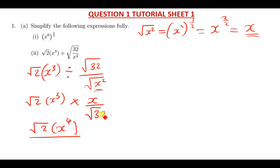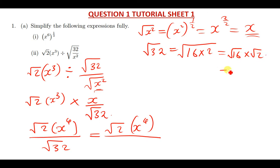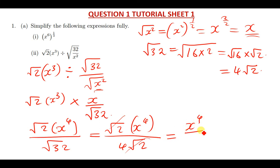On top we have root two times x to the power four, divided by the square root of 32. The square root of 32 can be written as the square root of 16 times 2, which equals the square root of 16 times the square root of 2, giving 4 root 2. The root 2 on top and the root 2 from the denominator cancel, so we are left with x to the power four over four.